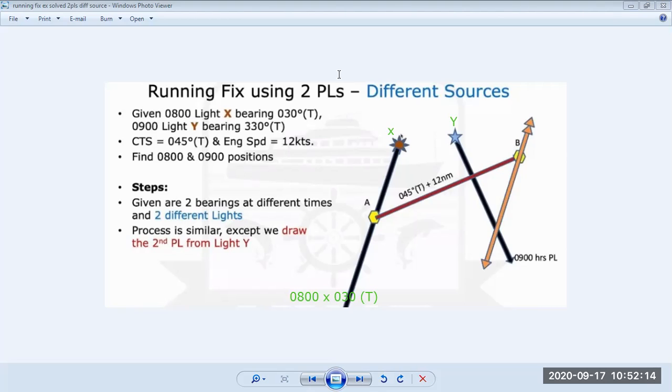Now if you want to find the position at 0800, just plot this reverse course, reverse of this, and you will get the position line. So this is your fix at 0800 and this is your fix at 0900.